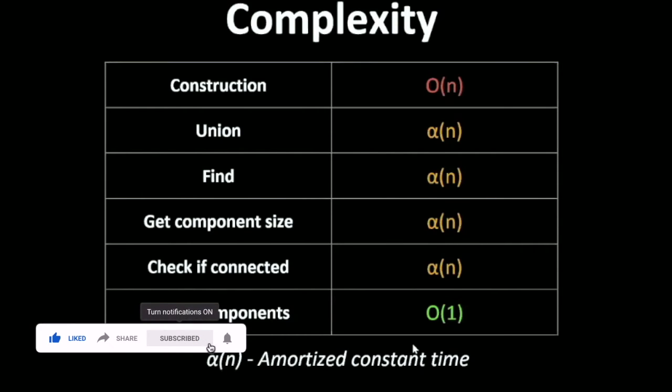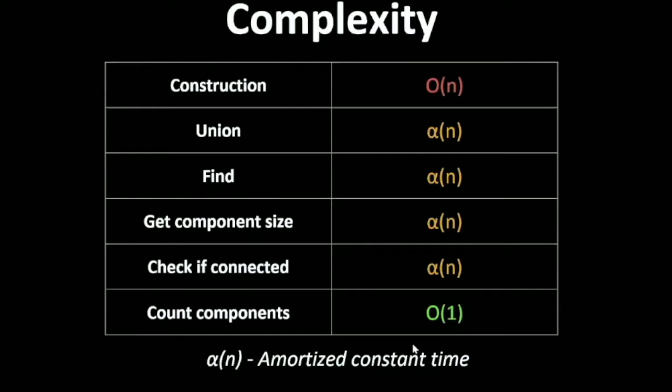Complexity-wise, this is one of the best data structures. All the complexity, whether it's Union or Find, get component size, all are amortized constant time complexities. You can read about this amortized constant time, but the construction of the data structure only takes linear time and all the other operations take constant time.